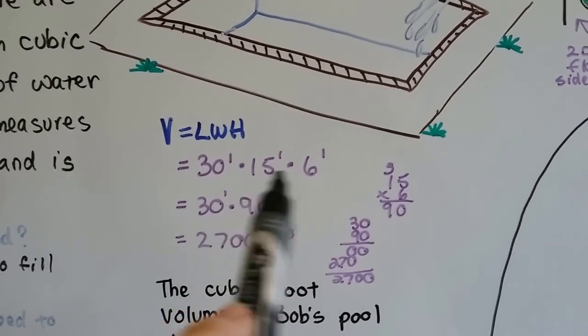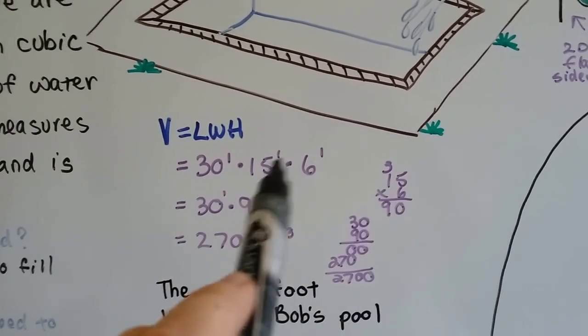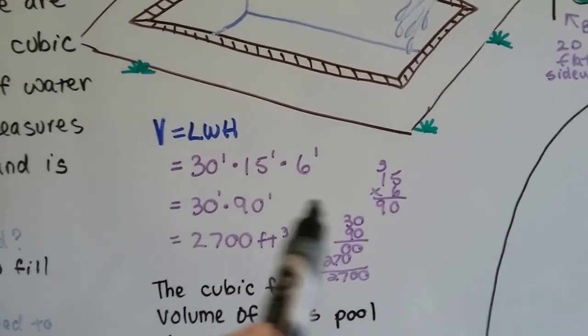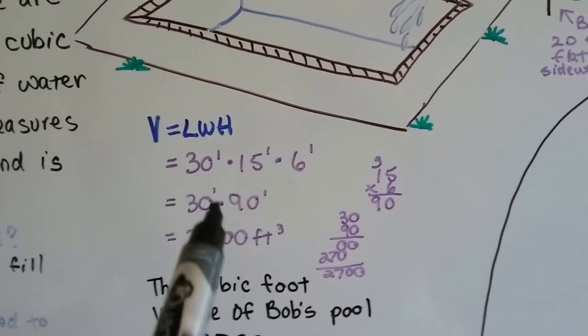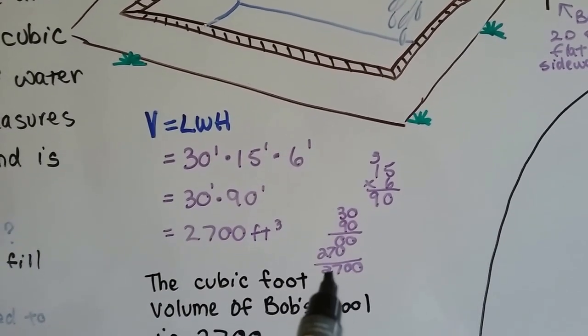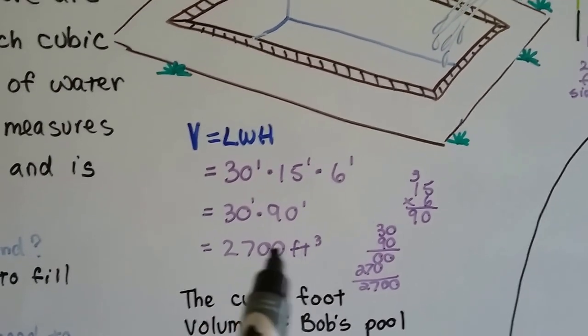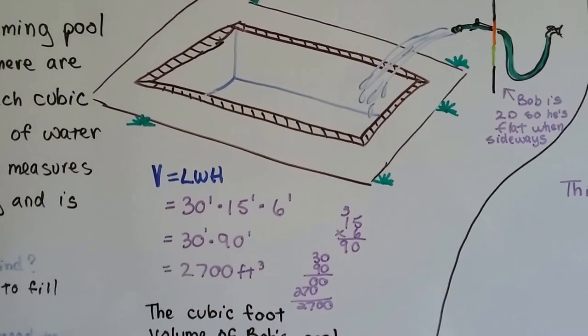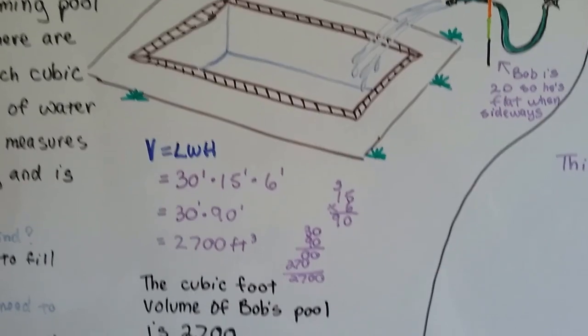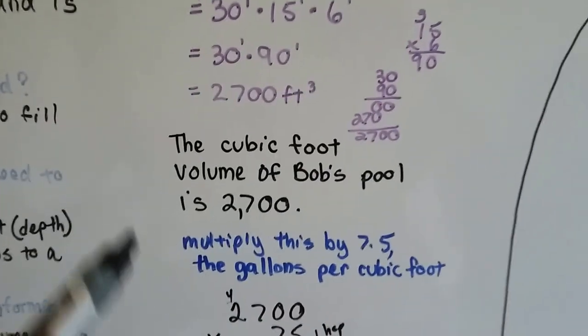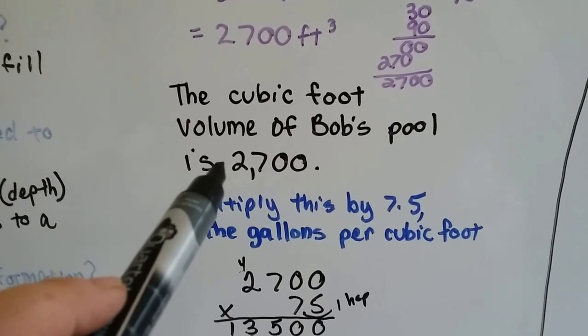Well, we do 15 times 6 right here, and we get 90. So now we've got 30 times 90. 30 times 90 is 2,700. So we know the volume is 2,700 cubic feet. Wow, that's pretty big. So the cubic foot volume of Bob's pool is 2,700.